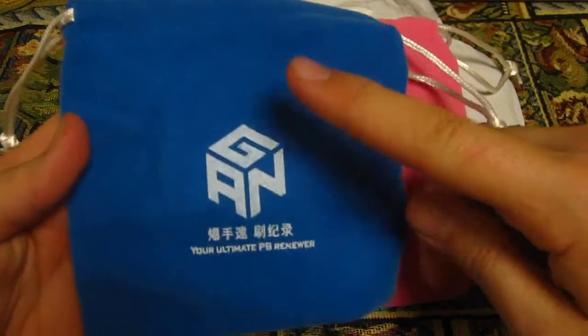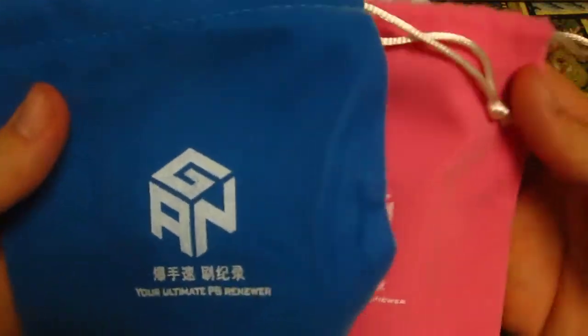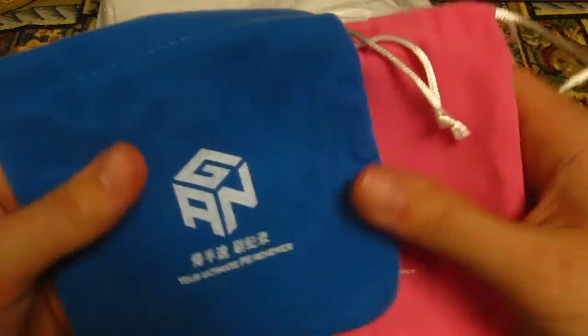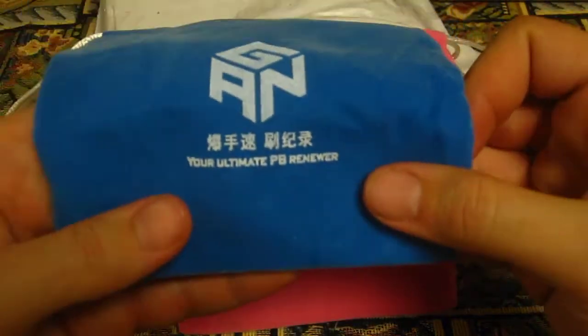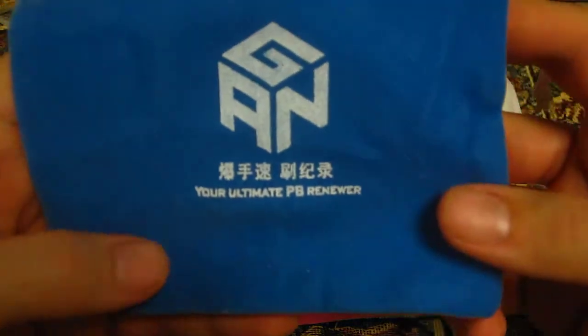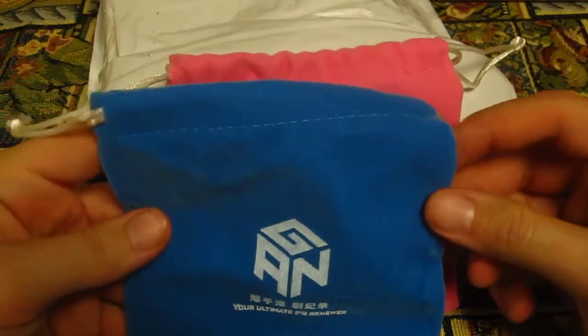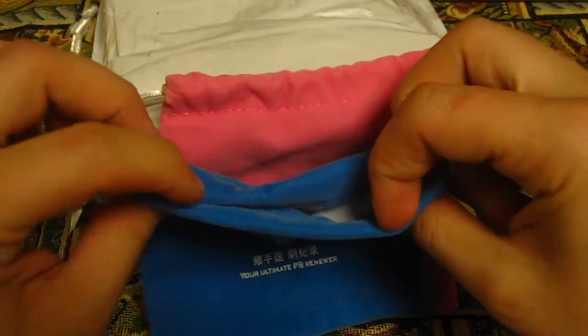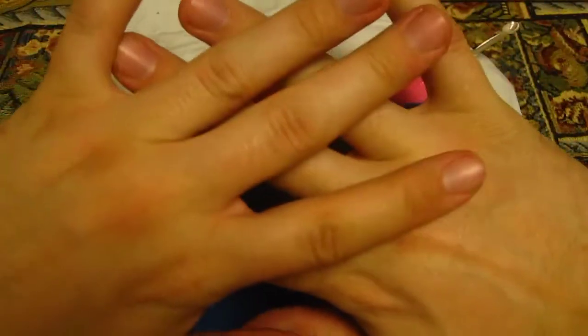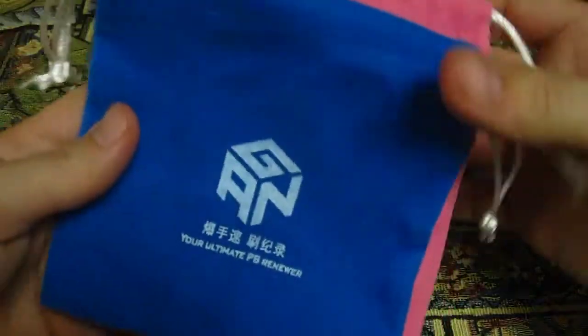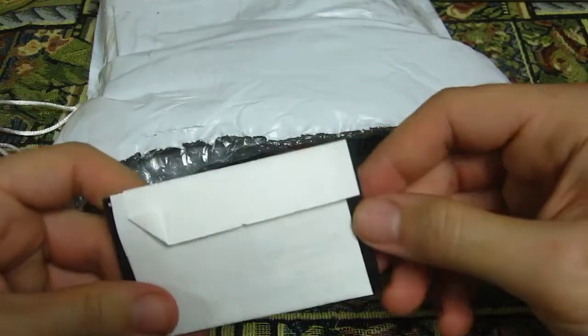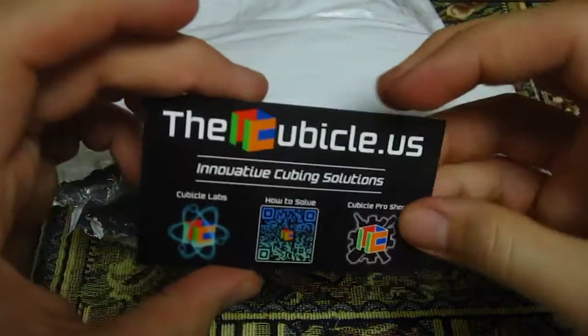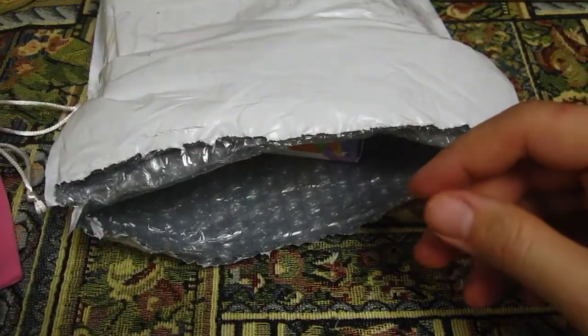This is actually a lot darker than I thought it would be. You can see it's a pretty dark blue and I'm not complaining about that at all, that's pretty cool. Oh, and by the way, it says Your Ultimate PB Renewer so that's pretty special as well. I'm not sure why but my camera settings like making my skin look very yellow, so that's weird anyway. So that's the first thing and of course, awesome business card as usual.